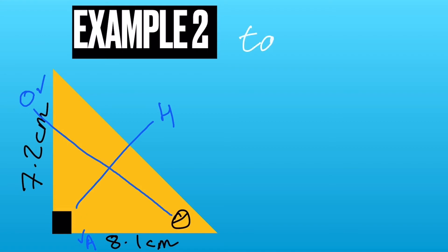So tan theta equals opposite over adjacent. So tan theta equals 7.2 over 8.1.